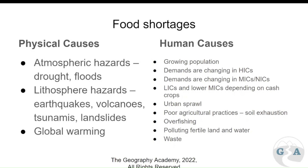LICs and lower MICs depending on cash crops means that a lot of their agricultural production is to send things away — cash crops are referencing something like coffee. Urban sprawl then means that more land is being taken away that could have been used for agriculture and is used for urban areas or cities. Poor agricultural practices — soil exhaustion is just one impact: if you keep growing the same thing on the same land over and over again without maintaining soil quality, it keeps draining the same nutrients from the soil.